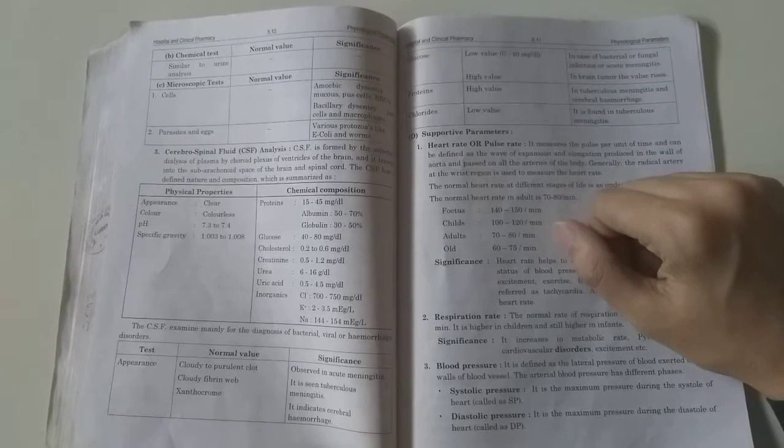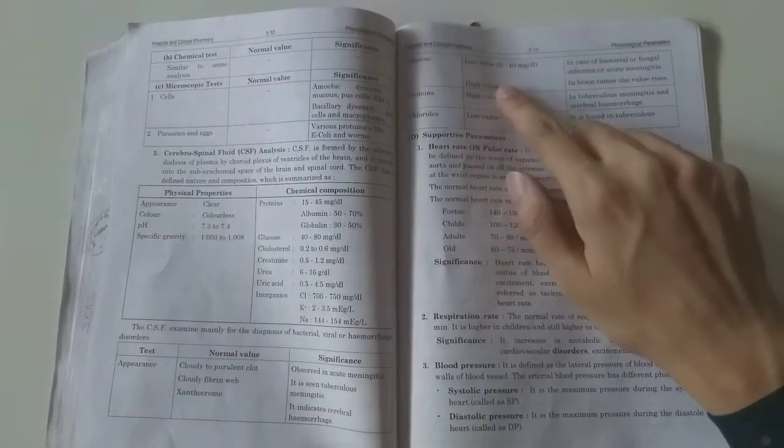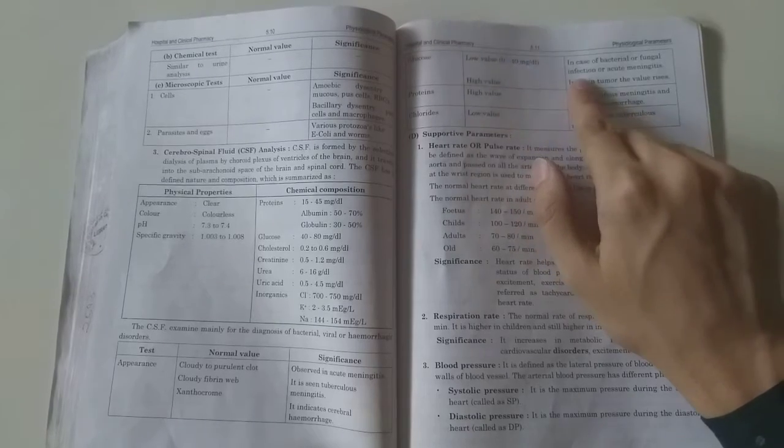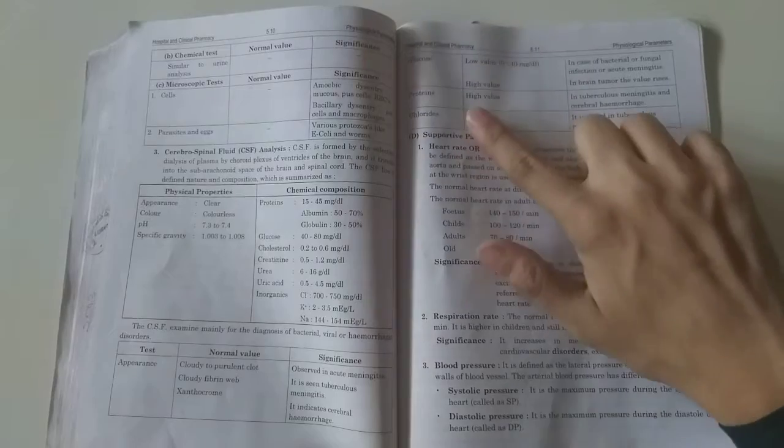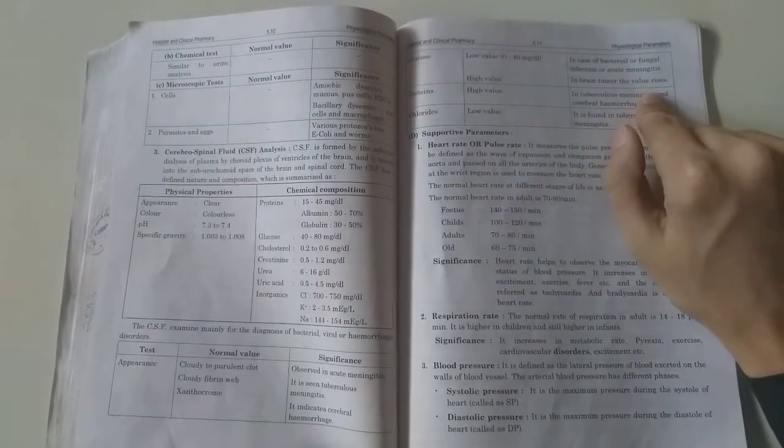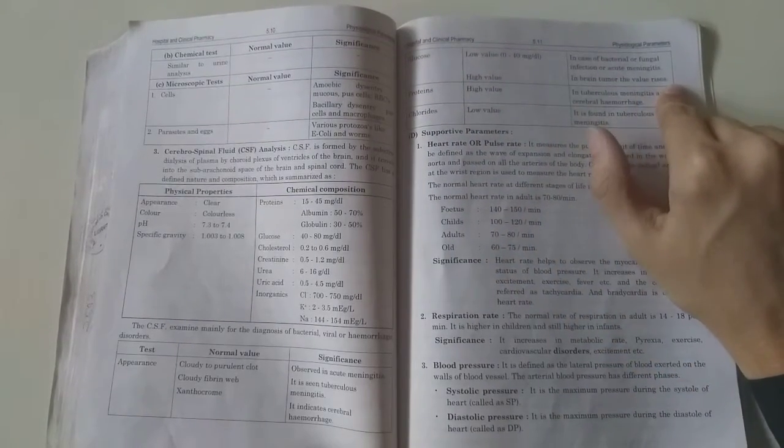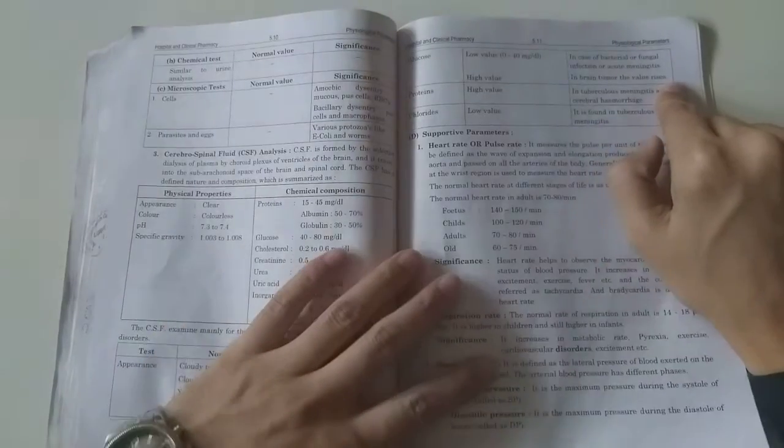Glucose levels: low value of 0 to 40 mg per deciliter indicates bacterial or fungal infection or acute meningitis. If the level is high in brain tumor, the glucose value rises.